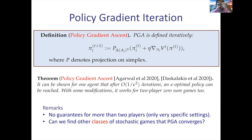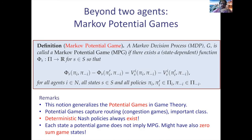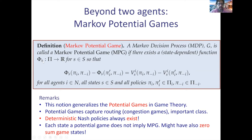That was our motivation, and this is why we defined a class of stochastic games called Markov potential games. If you're familiar with game theory, this is very much inspired by potential games. A Markov potential game is a stochastic game that has the following property: there exists a function φ that is state-dependent, takes policies as input, and returns a real number. We only know of the existence of this function — we don't know it explicitly.